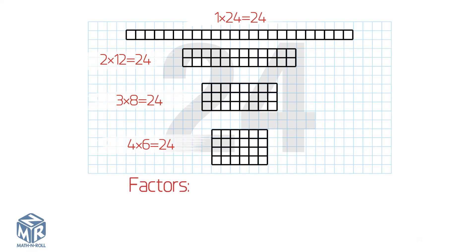The factors are 1, 24, 2, 12, 3, 8, 4, and 6. We can rewrite these factors from least to greatest: 1, 2, 3, 4, 6, 8, 12, and 24. We can represent the factor pairs using arcs.